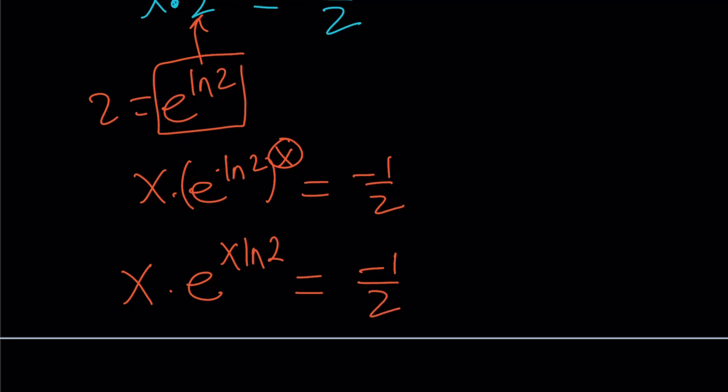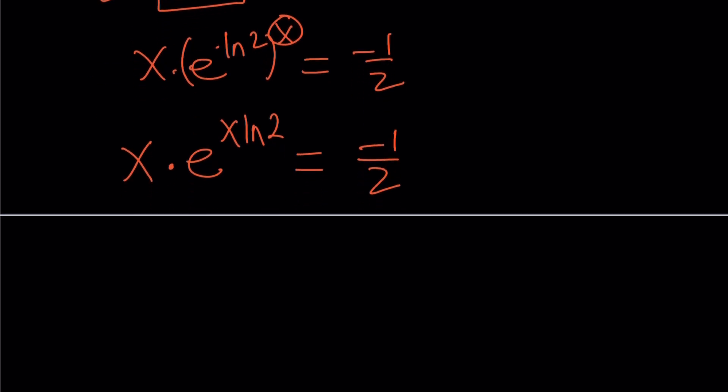Now, one thing that I'm missing here is, if we didn't have the ln 2 here, then it would be good. x times e to the x would work well. But we have an ln 2, but don't worry, it can be fixed very easily. Let's multiply both sides by ln 2.